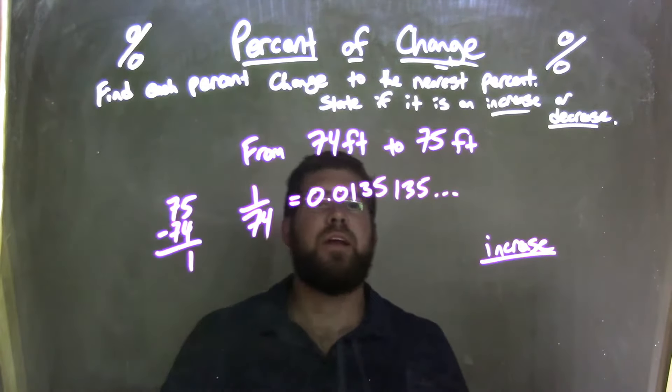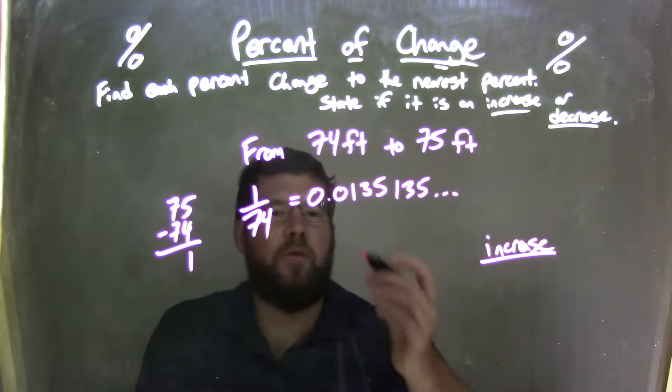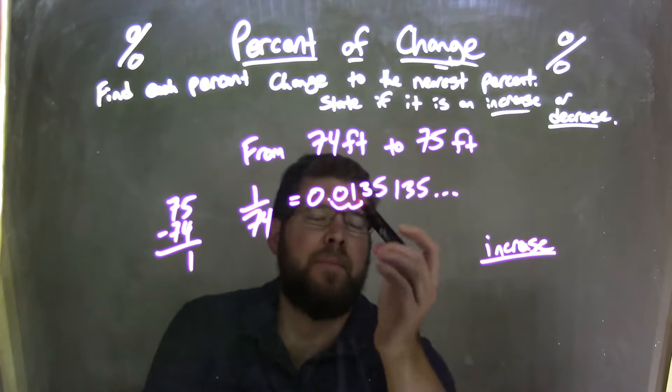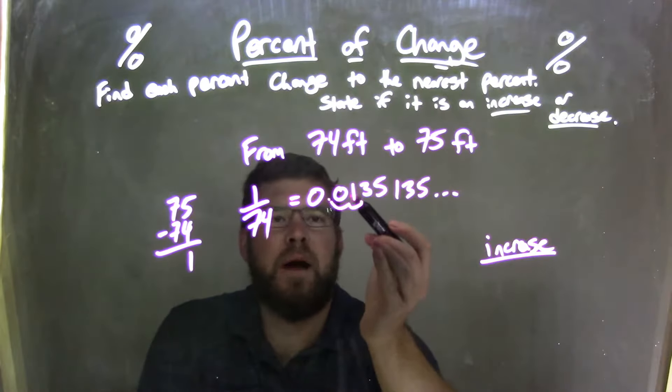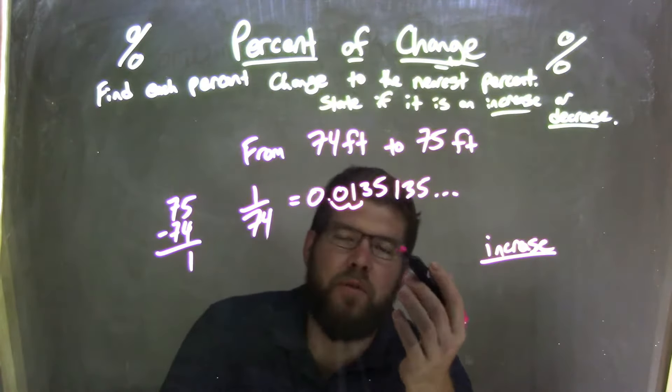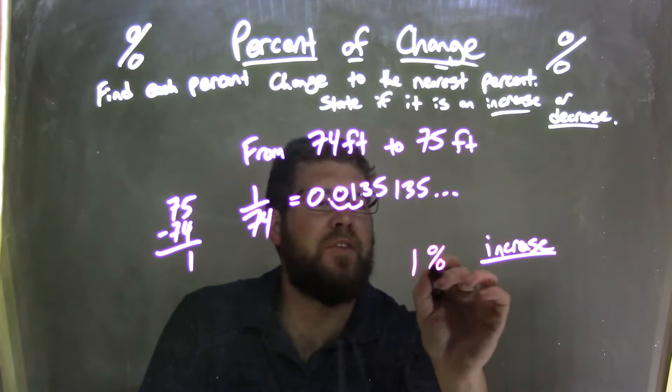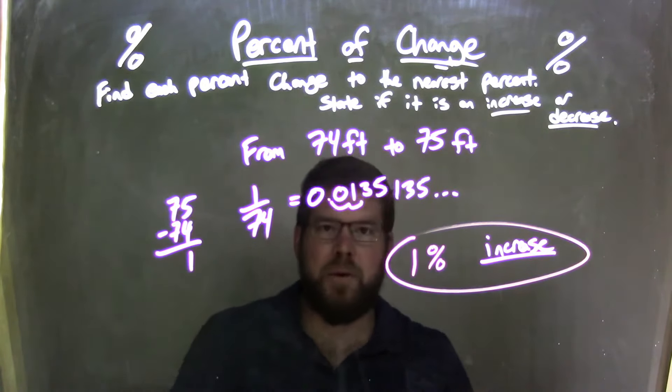So, how is that as a decimal? Well, or as a fraction? Move it over two units, right? 1, and then we look at there. So it's going to be a 1, but then we have that 3. 3 determines the rounding of this one right here. 3 is below 5. We don't round up. We keep the same, so we actually just have a 1% here. Rounding answer, of course. Increase.